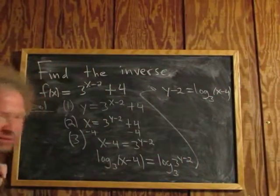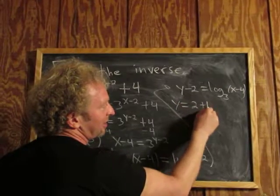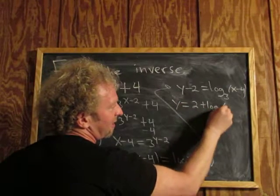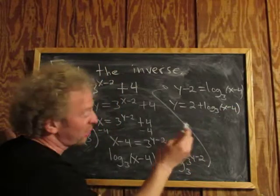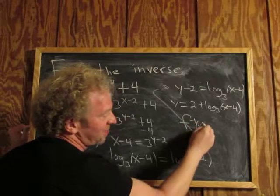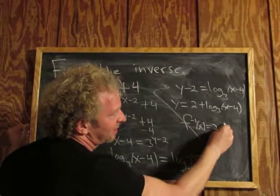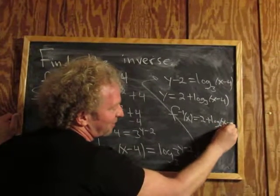To finish, you just add 2. So y equals 2 plus log base 3 of x minus 4. And that is the inverse function. You can write it using proper notation: f inverse of x equals 2 plus log base 3 of x minus 4.